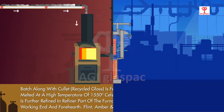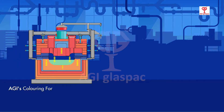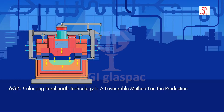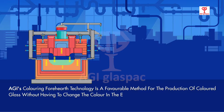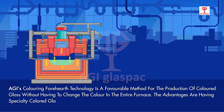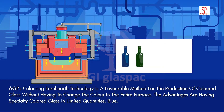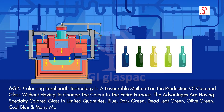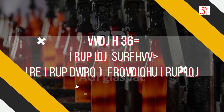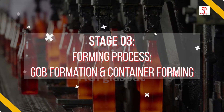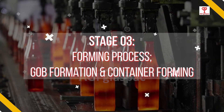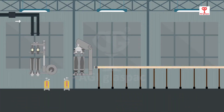AGI's forehearth coloring technology is a favorable method for the production of colored glass without having to change the color in the entire furnace. The advantages include producing specialty colored glass in limited quantities — blue, dark green, dead leaf green, olive green, cool blue, and many more.